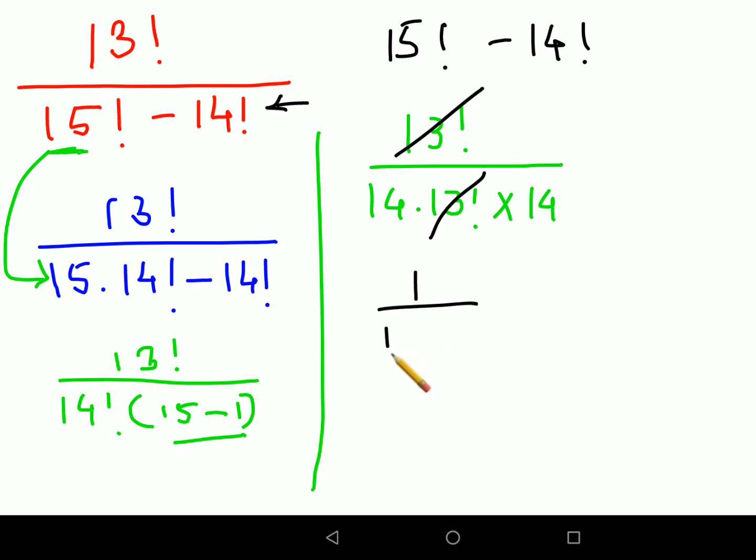Now if you see, this 13 factorial and 13 factorial can get cancelled. So we are just left with 1 upon 14 into 14. Basically that is nothing but 1 upon 14 square. So that answer is coming out to be 1 upon 196.